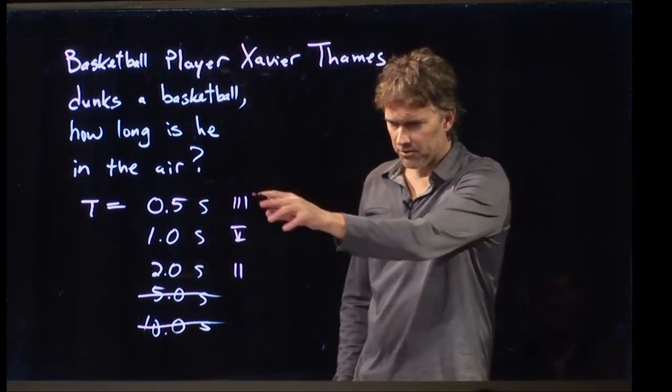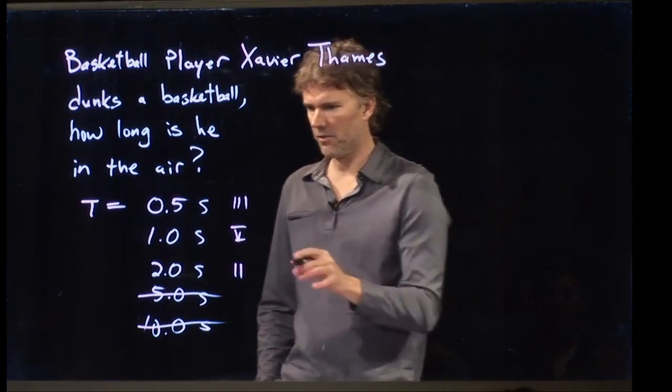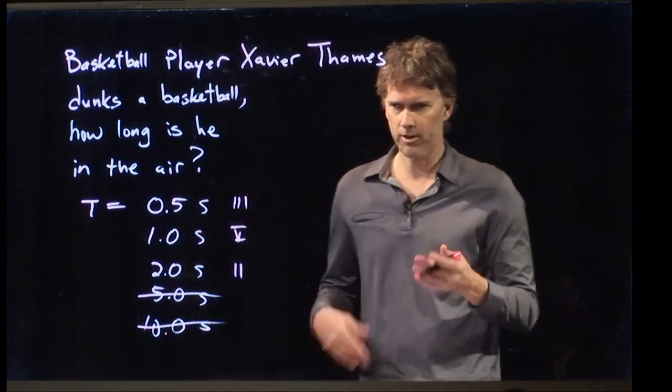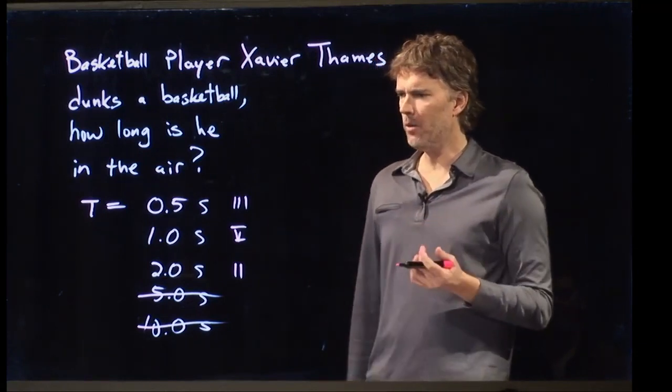One second. So, we've got a nice Gaussian distribution there between choices. And it looks like the average of all those is somewhere around one second. So, that's our guess. We're going to say one second that he's in the air. How do we figure this out?